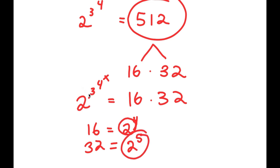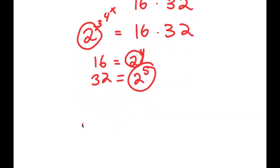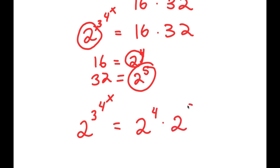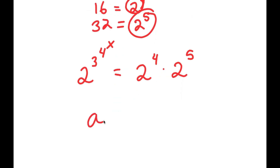Notice how we have another base of 2 over here: 2 to the power of 3 to the power of 4 to the power of x. So now I can rewrite this as 2 to the power of 3 to the power of 4 to the power of x is equal to 2 to the power of 4 times 2 to the power of 5. Now all my terms are bases of 2. If I have something in the form of a to the power of m times a to the power of n, this is equal to a to the power of m plus n.